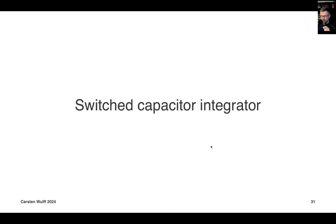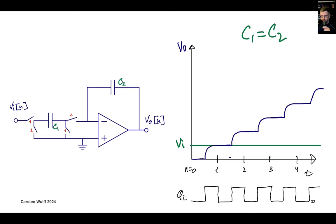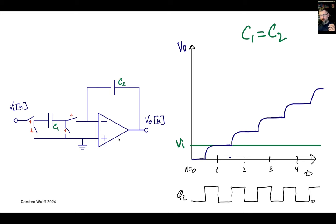If we don't reset C2 — don't null its charge — then every PHI2 we're adding a charge to C2 equal to VI times C1. This accumulates, eventually saturating at VDD or ground, but this is actually a very good integrator. The preciseness of integration is given by the loop gain of the op-amp. As long as you have an integrator, you can make a filter — and we can use these type of integrators in switch capacitor filters.